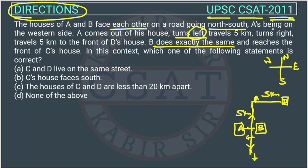B takes a right turn, so he is now facing west. He travels 5 km and reaches the front of C's house. So this is the house of C, also 5 km from the turn point.